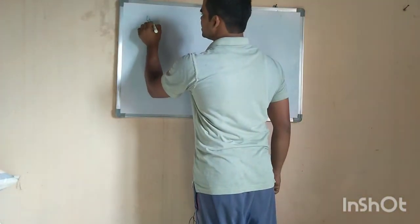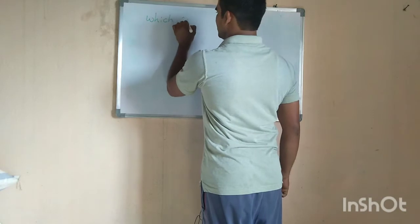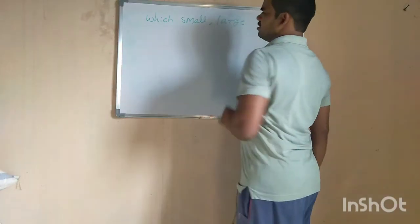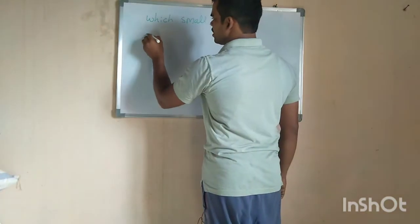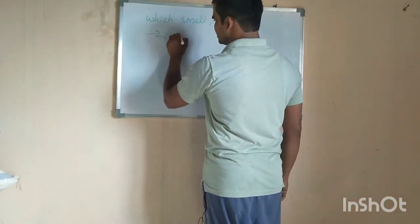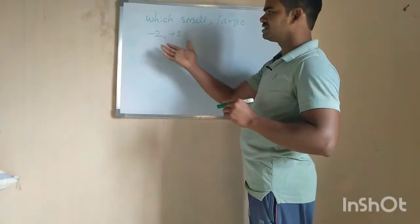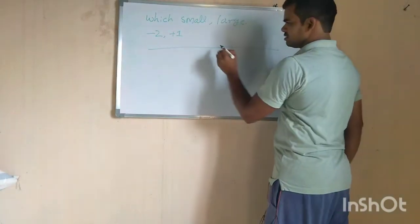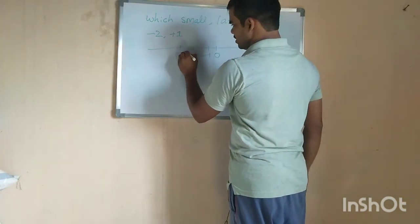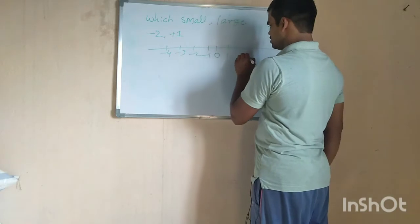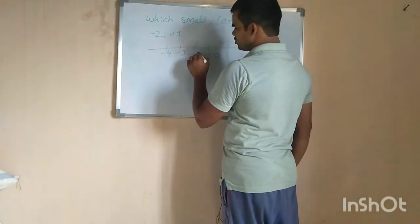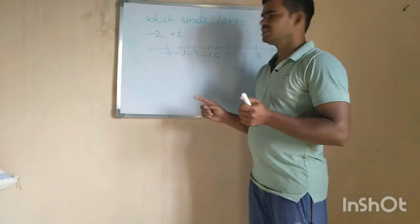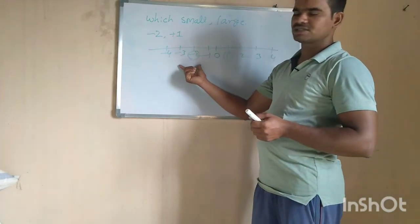We are going to see which number is small and which one is large. I have two numbers: minus two and plus one. Which one is larger and which one is smaller? We need to check. For that, I want a number line: 0, minus 1, minus 2, minus 3, minus 4, 1, 2, 3, 4. I just want to represent the two values — minus 2 and plus 1 — on the number line.